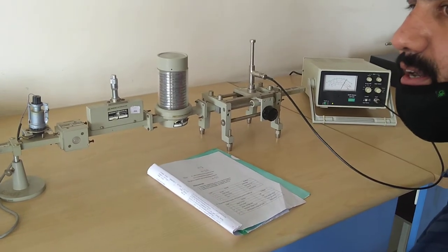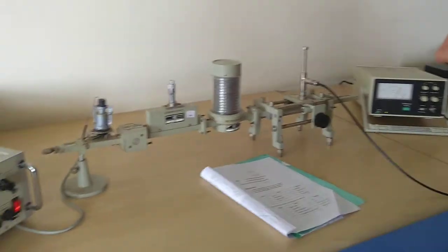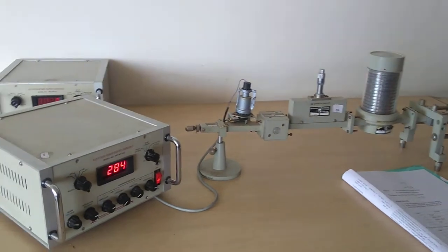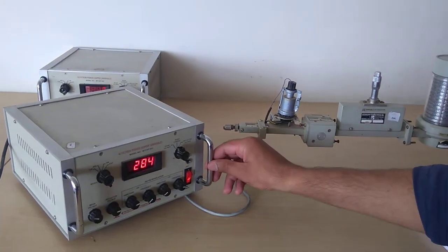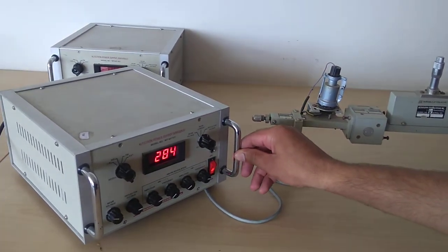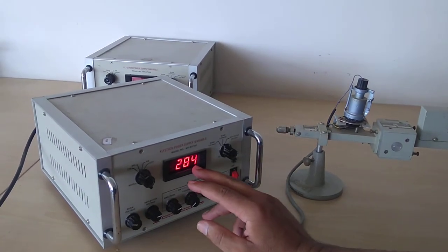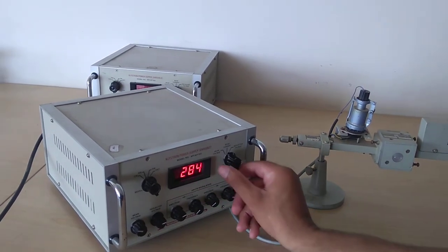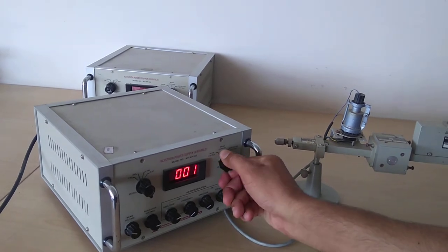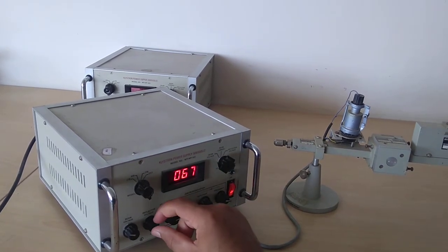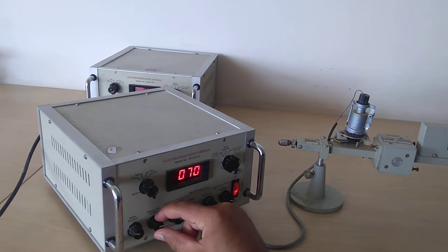First, I start our Klystron power supply. The beam voltage is set at 284 volts, and the filament voltage is around 67 to 70 volts.